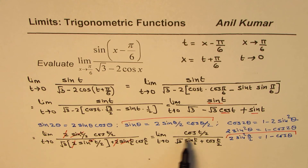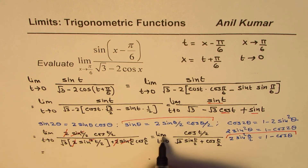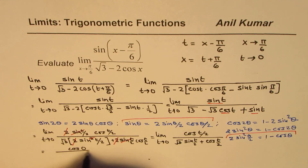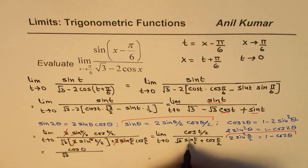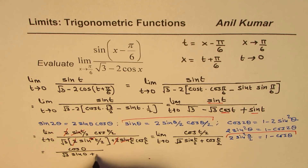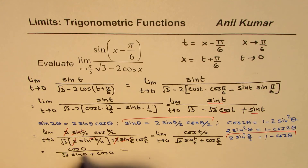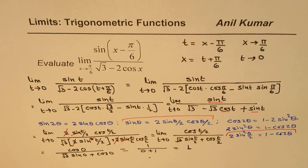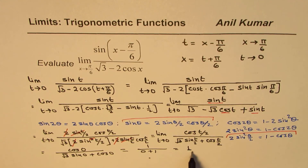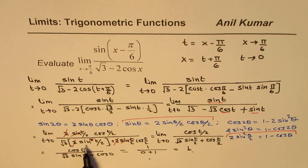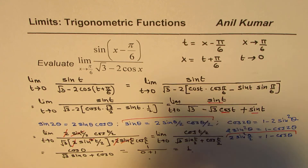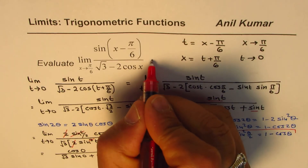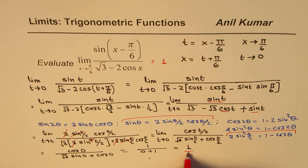Now we can directly substitute t = 0. We get cos(0) over √3·sin(0) + cos(0) = 1 over (0 + 1) = 1. So the limit of the given function equals 1, which is our answer.